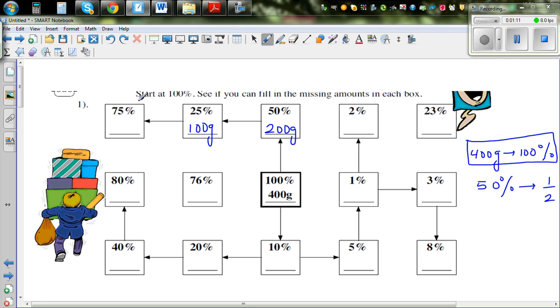I want you to think how to find 75%. 75%, logically I hope you can see, is 25% plus 50%. So if you know 50% and 25%, you can find 75%. So 200 grams plus 100 grams is 300 grams.